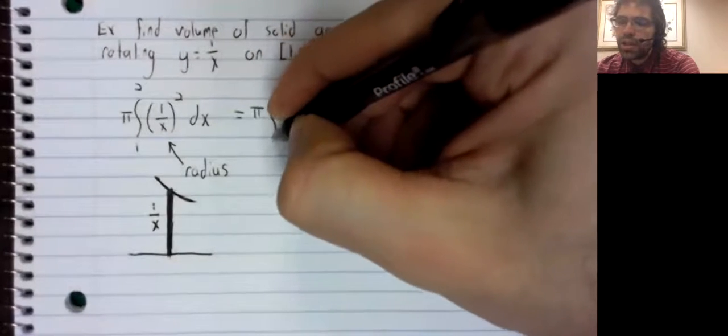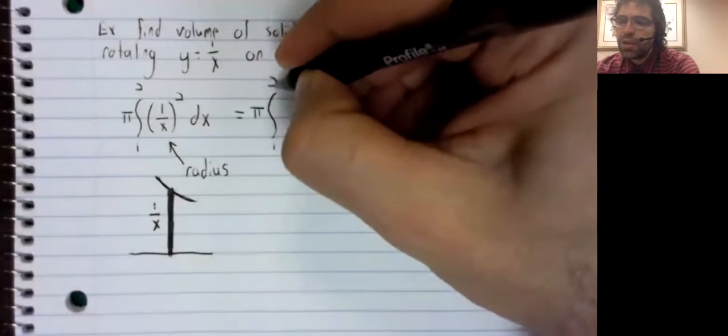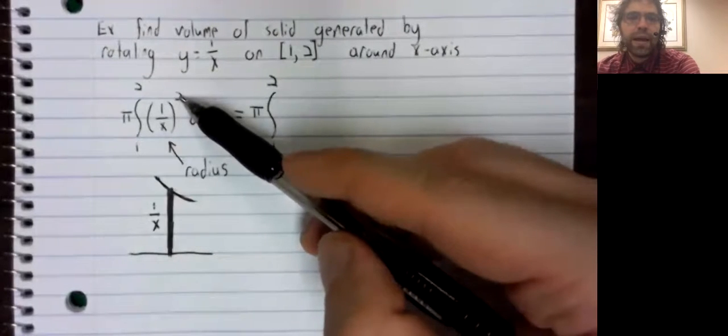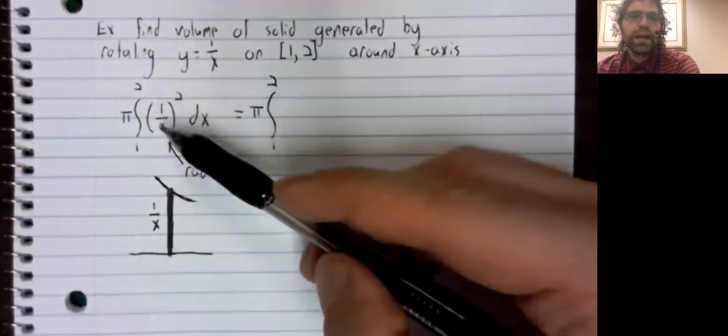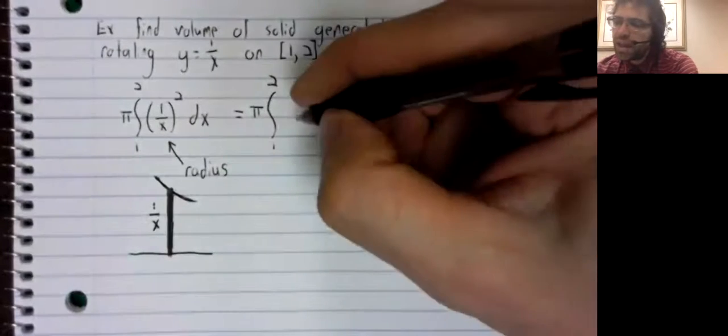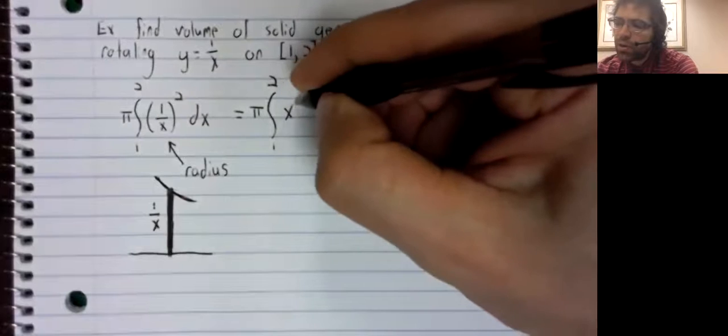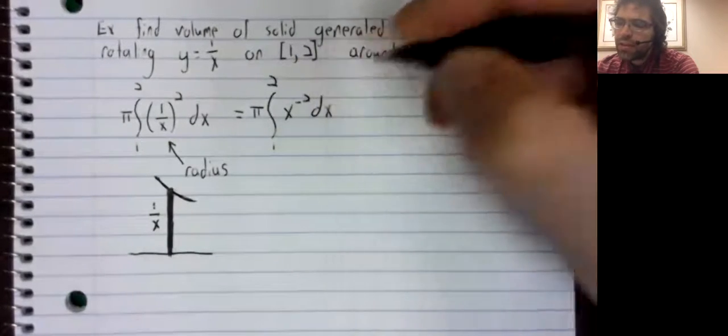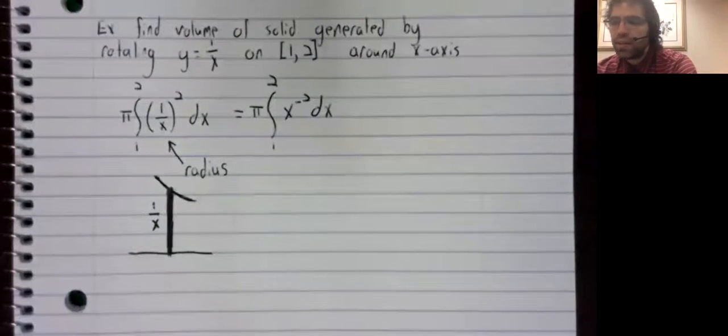Anyway, let's see. 1 divided by x squared is 1 squared divided by x squared. So x to the negative second.